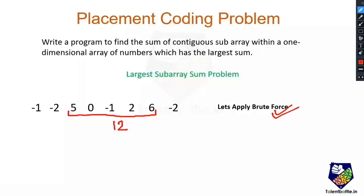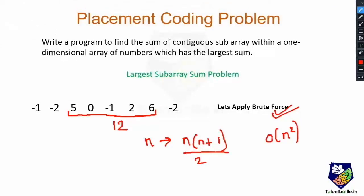But there is one problem with the brute force solution. If our array consists of n elements, the total number of contiguous subarrays is n × (n + 1) / 2. So the time complexity becomes O(n²). If the value of n is very large, the program will definitely exceed the time limit. So we have to check if there exists a more efficient solution.